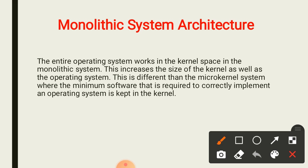The operating system of the mobile is divided into two parts: monolithic and micro kernel. In a monolithic system, the entire operating system works in the kernel space, which increases the size of the kernel as well as the operating system. This is different from the micro kernel system, where the minimum software required to correctly implement the operating system is kept in the kernel.